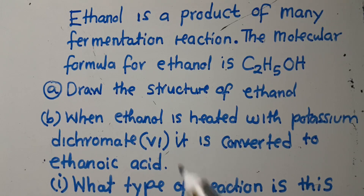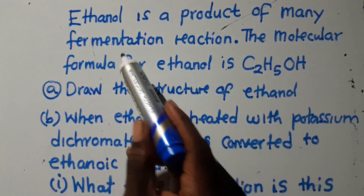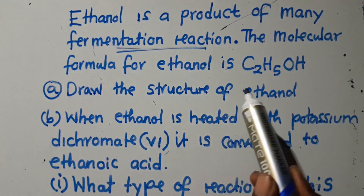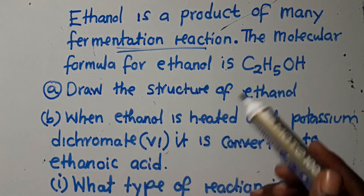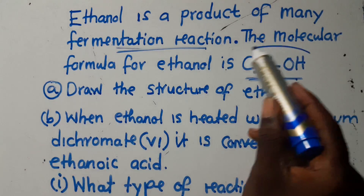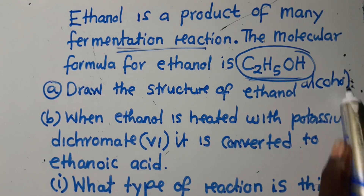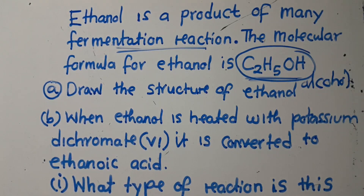The question is saying ethanol is a product of many fermentation reactions. The molecular formula for ethanol is given here. The ethanol we are talking about is an alcohol — this is what you need to understand before we go further. This is an alcohol that is formed when fermentation has taken place, and the alcohol produced is called ethanol.